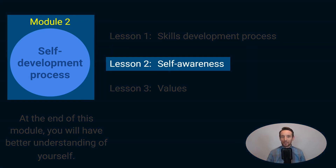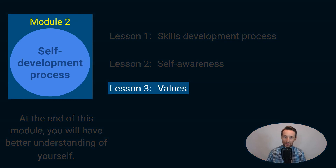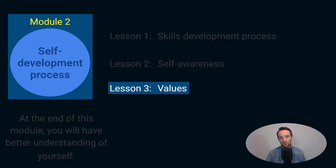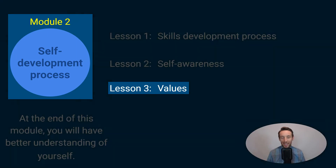Lesson two: self-awareness. This lesson has three exercises which will allow you to explore your strengths and weaknesses. Lesson three is all about values and we will try to clarify them, because we all live by a certain set of values and not being clear about them carries a risk that we may unintentionally act against them. This is where our peace of mind and integrity will suffer, and I don't think I have to tell you how that will affect your results and happiness.